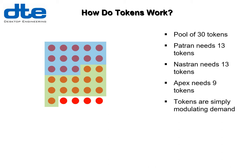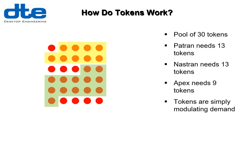He then thinks that while the analysis is running he'd quite like to use Apex to clean up some geometry and make a midplane. But when that happens it gets rejected on the basis there are too few tokens available. So the user simply closes Patran and then there are enough tokens available for Apex. It's really just a way of modulating demand for the products so that you can scale up by buying more tokens if you need to.